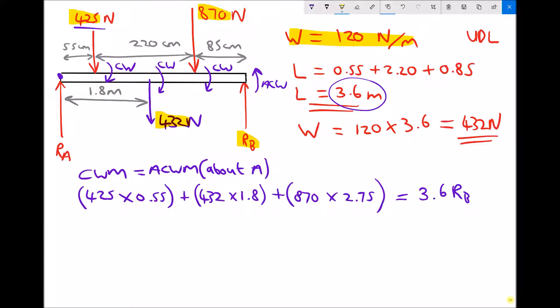So now we can simplify the left-hand side of our equation, and we get 425 times 0.55 plus 432 times 1.8 plus 870 times 2.75, and that gives us a total of 3403.8. And our right-hand side is still 3.6 RB. So next we need to rearrange that to make RB the subject, and our operation is to divide each side by 3.6. So if we divide each side of that equation by 3.6, we'll get RB equals 3403.8 divided by 3.6, giving us a value of RB equal to 945.5 Newtons.